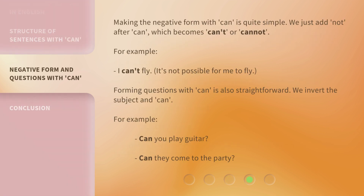Making the negative form with can is quite simple. We just add 'not' after can, which becomes can't or cannot. For example: I can't fly — it's not possible for me to fly. Forming questions with can is also straightforward. We invert the subject and can. For example: Can you play guitar? Can they come to the party?